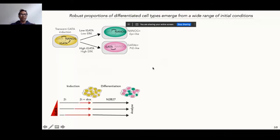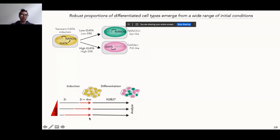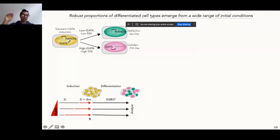Experimentally, we start with NANOG-expressing ESCs exposed to different durations of doxycycline. This brings the cells to a co-expression state where they're expressing both factors at slightly different ratios. In the second phase of the experiment, we allow these cells to differentiate. After about 40 hours of differentiation, we fix and stain the cells and analyze them to quantify the relative proportions of cell types that we get.